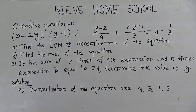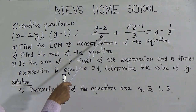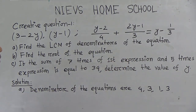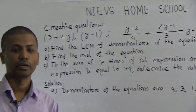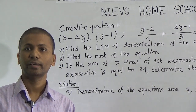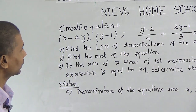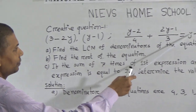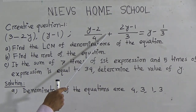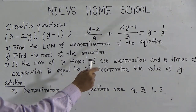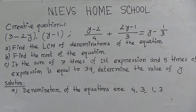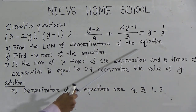You see this is the equation. Here y is called a variable, and 4, 3, 3, 1 are called constant terms. We know an equation is associated with a variable, an operational sign, and an equality sign. You can see the equality sign, and the operational signs: minus, plus, minus, minus. So this is an equation.